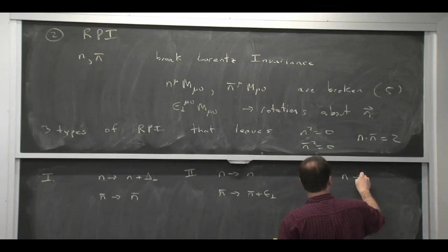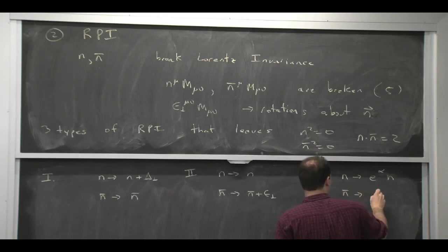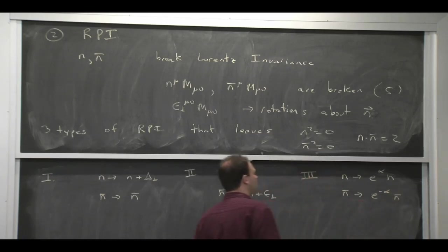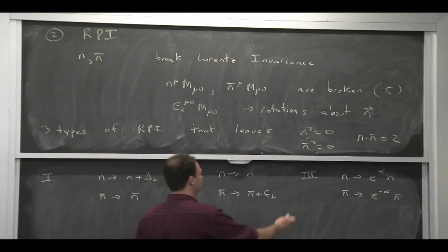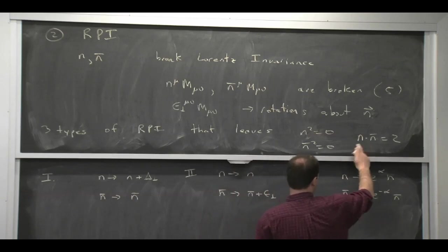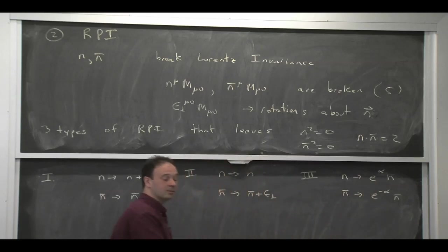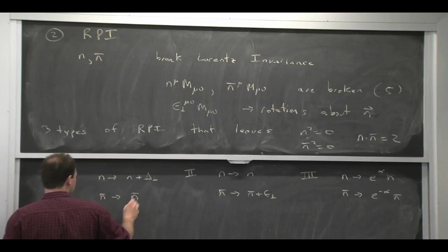And this one, let me write it like this. It's a simultaneous transformation of these two guys where I just do a multiplicative factor. Well, a multiplicative factor is not going to change the fact that the square of something is zero. The place where the normalization comes in is this n dot n bar. And if I just rescale them both by an opposite amount, then that remains satisfied as well.